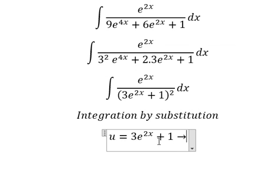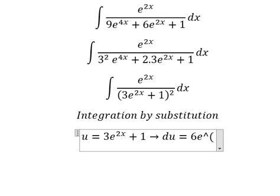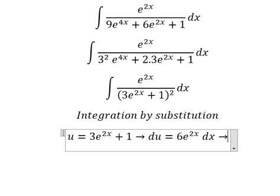Next we do the derivative for both sides, so we have 6e to the power of 2x dx. Because we don't have number six, so we divide both sides by number six.